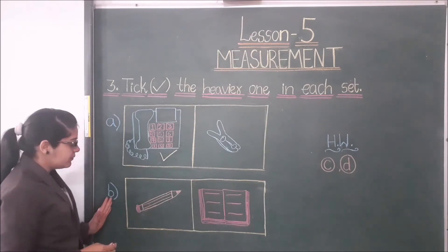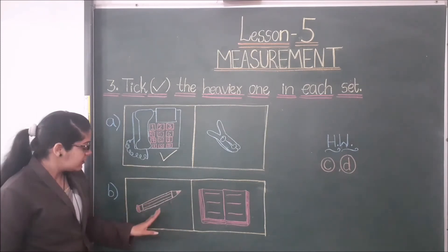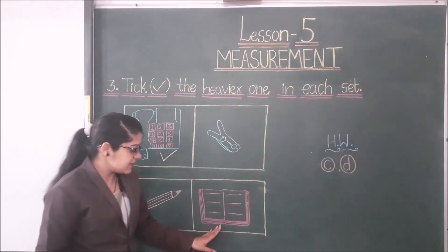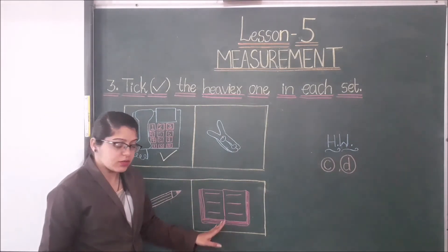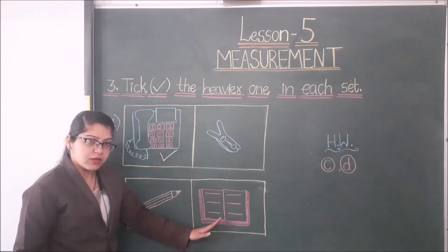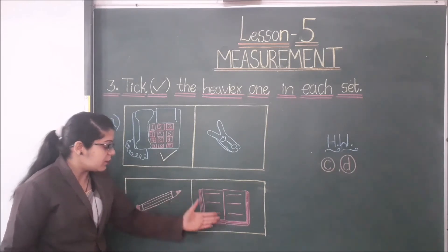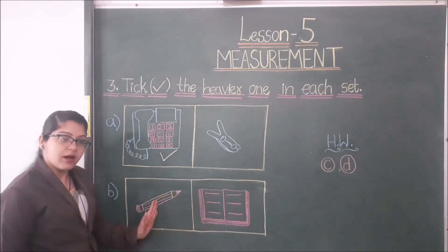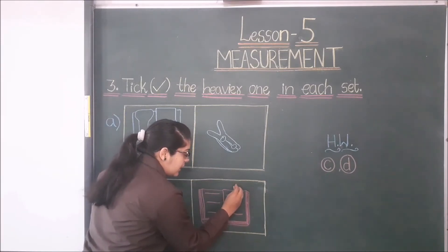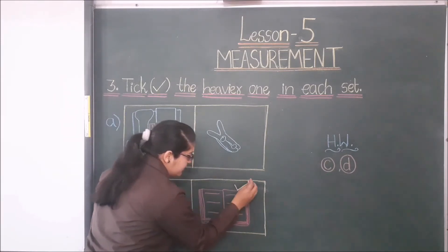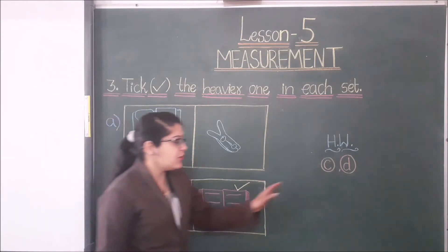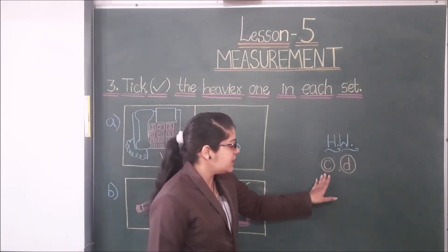Let's see the next one — two things are given: a pencil and a book. Which one is heavy? A book is heavier than a pencil. So here we circle the book. In the same way, you have to do C and D.